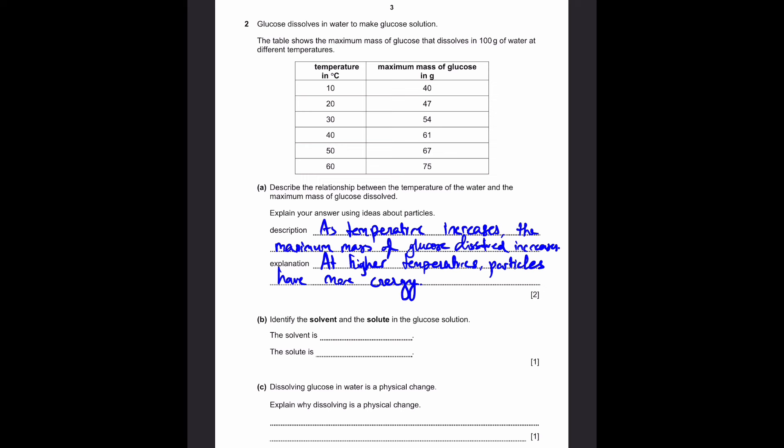Part B: Identify the solvent and the solute in the glucose solution. In this case, the solvent is a liquid in which the solute dissolves. So this will simply be the water. The solute is the solid which dissolves inside the liquid or solvent, and in this case, it's simply the glucose. That's our answer.